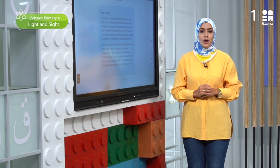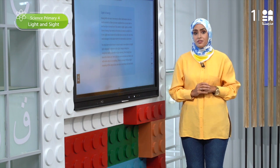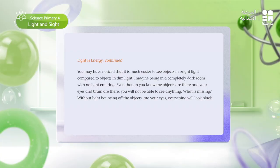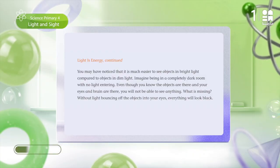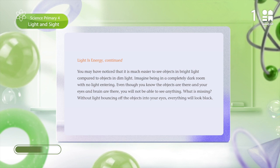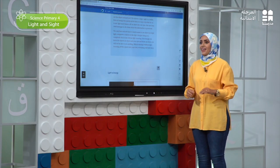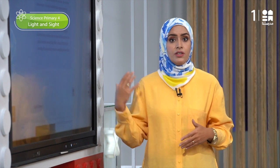Now go back to your student book page 76 and read the second paragraph. Analyze each sentence to get the information. All of my students agreed on this main idea from the second paragraph: sight and vision cannot happen without light. Even if all the components are present — eyes, nervous system, objects around you — without light, we would not be able to see.